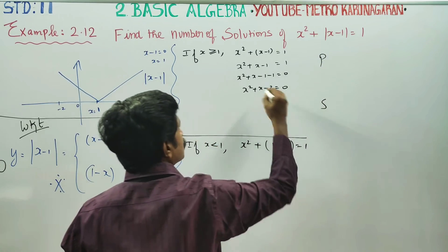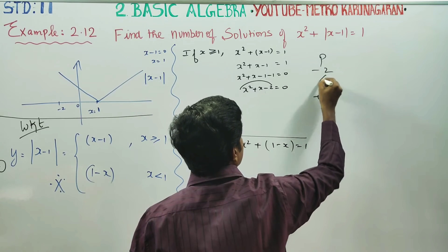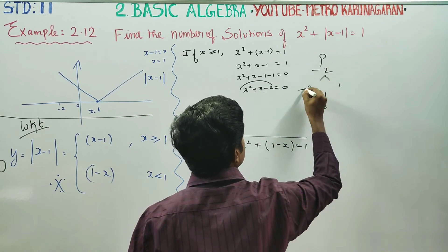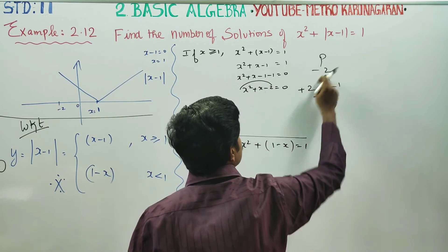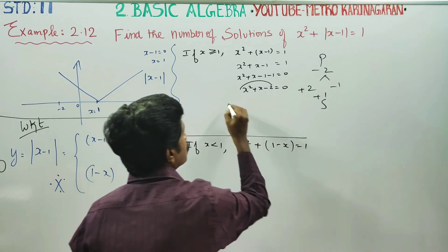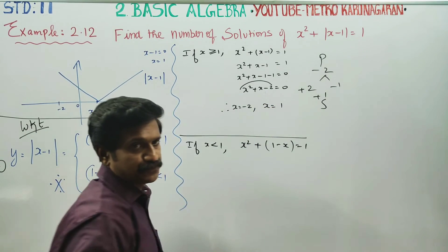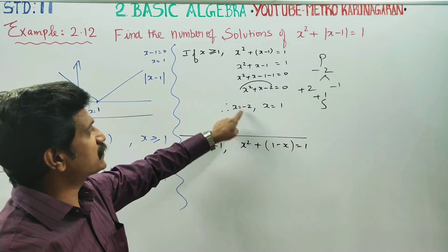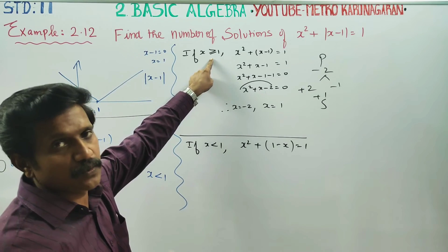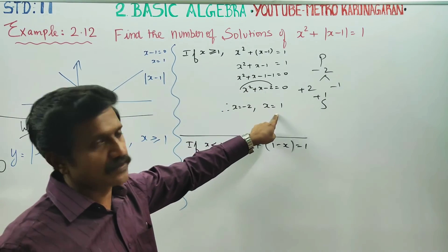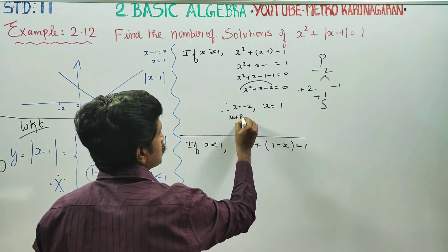Go for product and sum method. The product is minus 2 and the sum is 1. Using factors: plus 2 and minus 1. Therefore x is equal to minus 2 and x is equal to 1. Now x equal to minus 2 is not possible because our condition is x greater than or equal to 1.